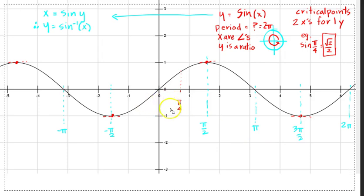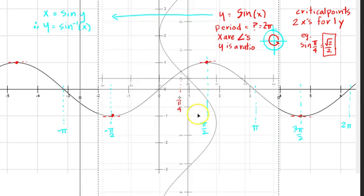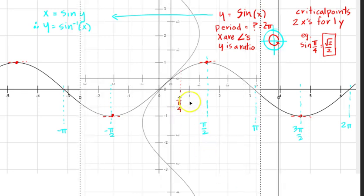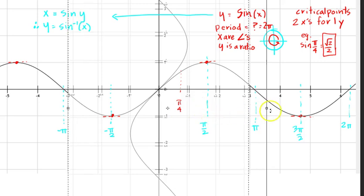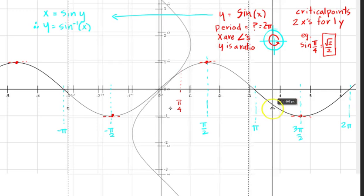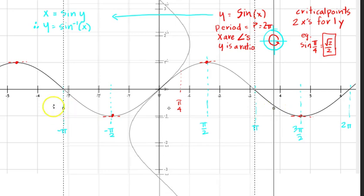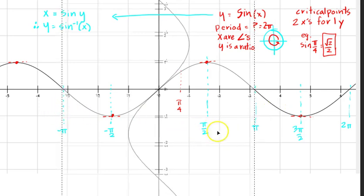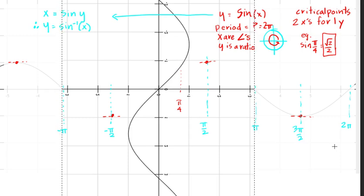You are reflecting across y equals x. What I'm going to do is rotate it 90 degrees clockwise and then flip it horizontally. Let's put it in line. Doesn't have to be beautiful, but you get the idea. There's my new function. What you have here is y equals inverse sine of x.